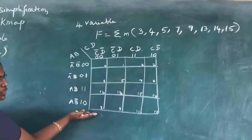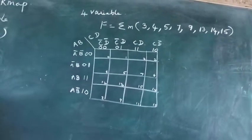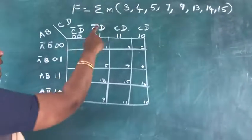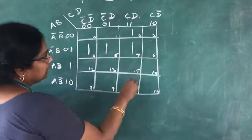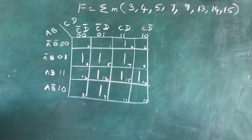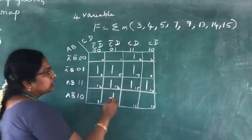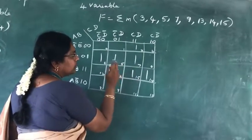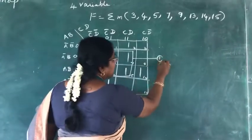Once the cells are labeled, we plot the given Boolean function by marking 1 in cells 3, 4, 5, 7, 9, 13, 14, and 15. After plotting, we form groups, giving priority to the largest group. We can find a square adjacency between cells 5, 7, 13, and 15, so we form a group of all four 1s together as group number 1.